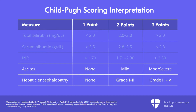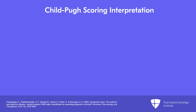I actually have this bookmarked on my phone — you can look it up on Wikipedia. All you need is a table with the points and those three labs: total bilirubin, serum albumin, and INR, as well as some appreciation of the clinical presence of ascites or hepatic encephalopathy. The Child-Pugh scoring interpretation adds up the points and assigns class A, B, or C.